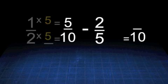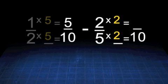Now change 2 fifths into a fraction with a new LCD. 5 times what equals 10? 2. 5 times 2 equals 10. Multiply the numerator and the denominator by 2 to get 4 tenths.